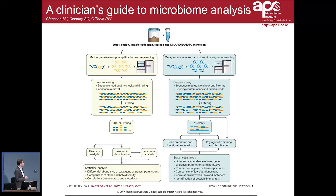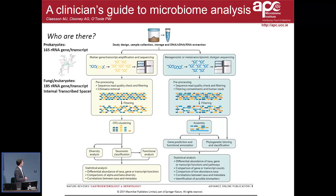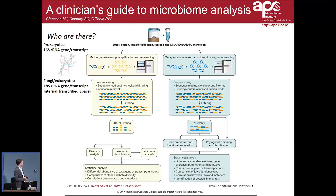You have the choice of sequencing a marker gene — answering who is there, what bacteria are in your gut — and by far the most common marker gene would be part of the 16S ribosomal RNA gene. You can also sequence rRNA transcripts to find out what the metabolic activity is. If you're interested in fungi or single-cell eukaryotes, you have the option of sequencing either the 18S RNA gene or the internal transcribed spacer.